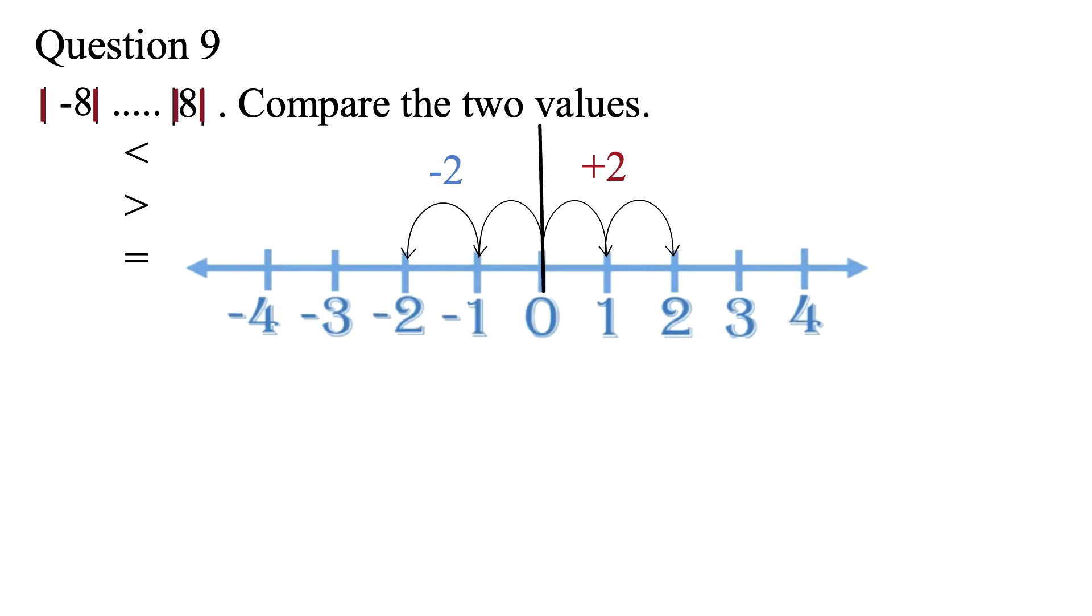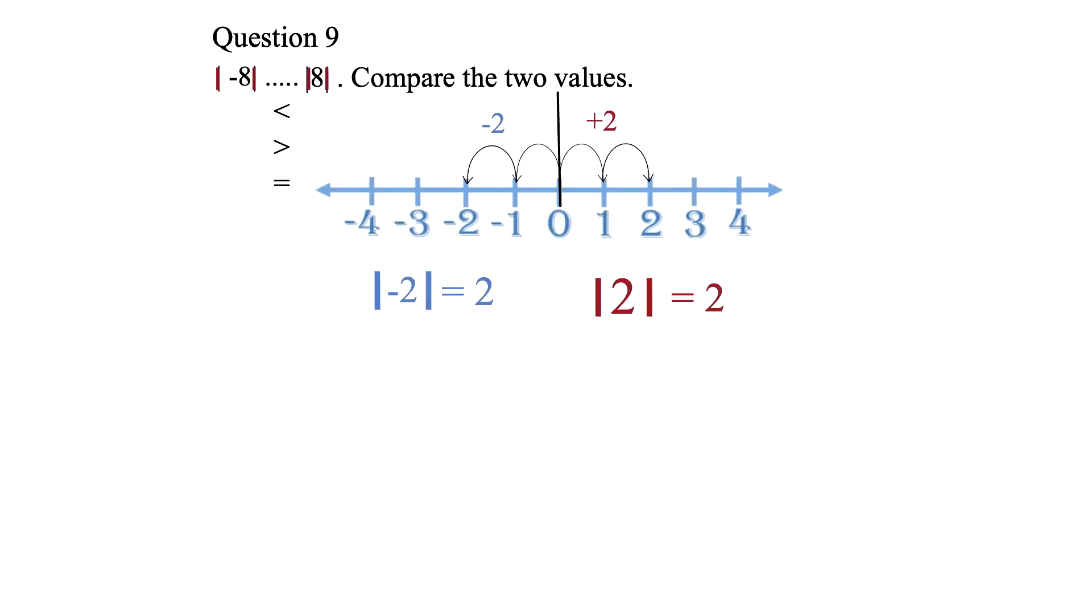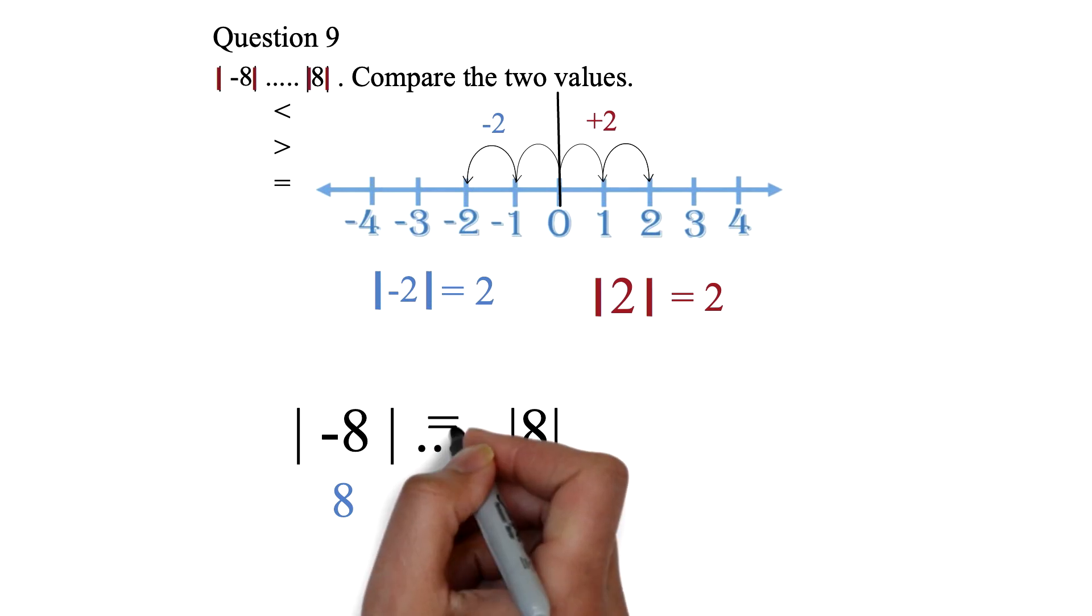Absolute value doesn't care about whether the movement was to the right or to the left. It just cares about the fact that you moved 2. Whether you move to the right, which is positive 2, the absolute value is 2. Or you move to the left, which is negative 2, the absolute value is 2. So for our question, we can say that the absolute value of negative 8 is 8 and the absolute value of positive 8 is also 8. So these values are equal.